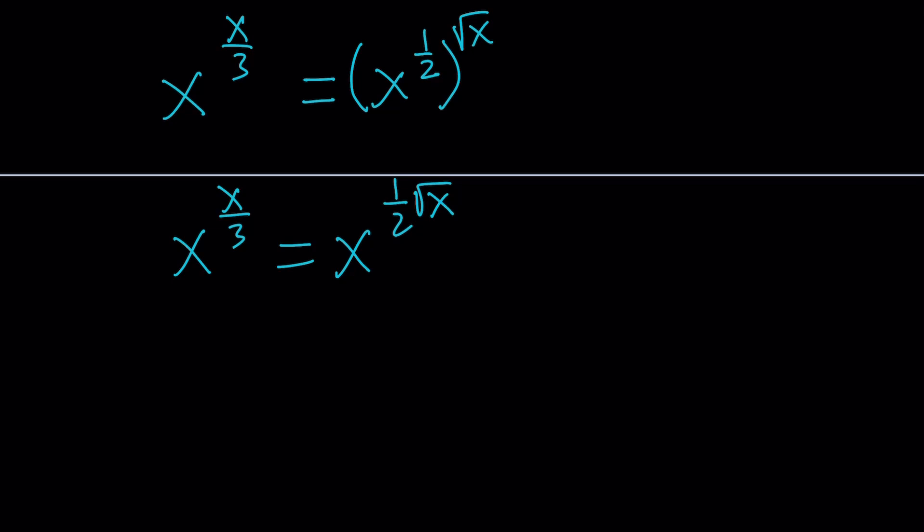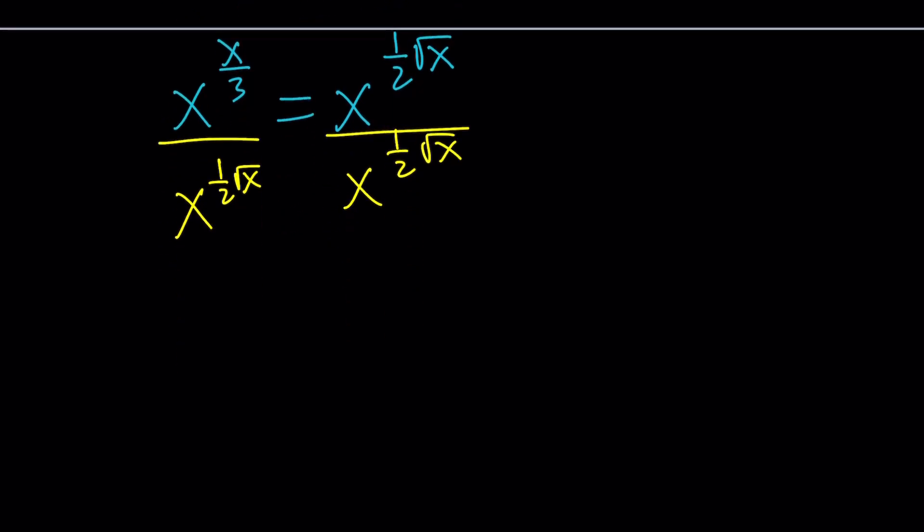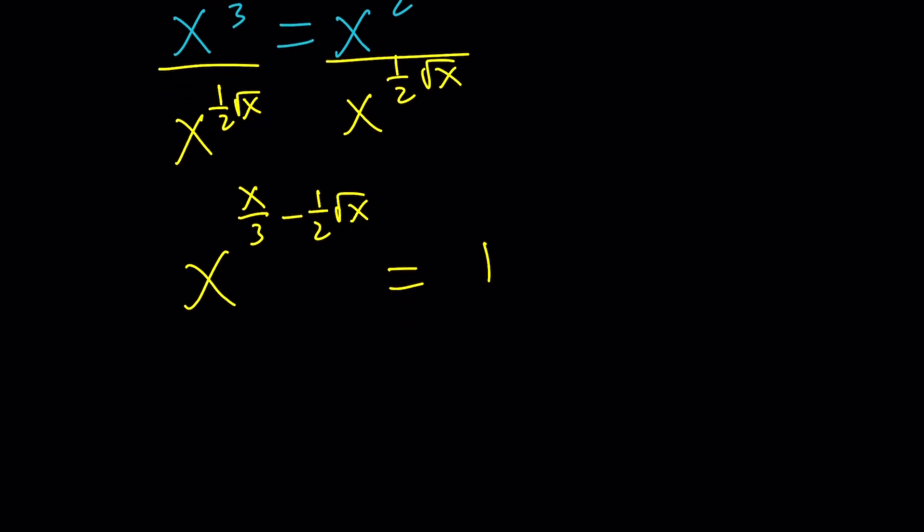And that's going to give you a 1 on one side, which is good. And here on the left, we need to subtract the exponents, because the bases are the same. So this gives us 1. This is good, because when you have 1 with the real scenario, then we have a limited number of cases.